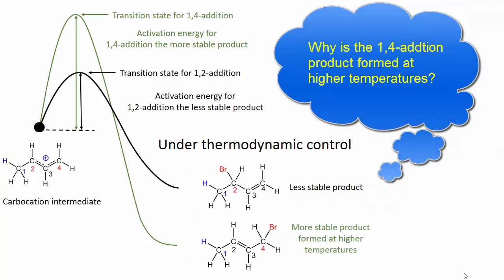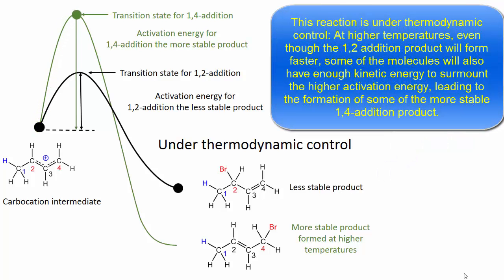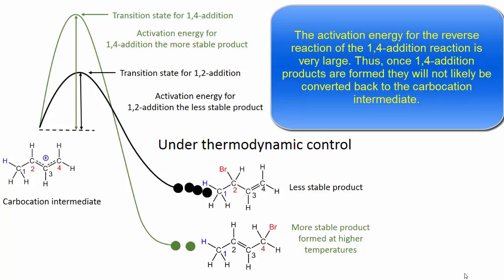Why is the 1,4-addition product formed at higher temperatures? This reaction is under thermodynamic control. At higher temperatures, even though the 1,2-addition product will form faster, some molecules will also have enough kinetic energy to surmount the higher activation energy, leading to the formation of some of the more stable 1,4-addition product. The activation energy for the reverse reaction of the 1,4-addition reaction is very large. Thus, once 1,4-addition products are formed, they will not likely be converted back to the carbocation intermediate.